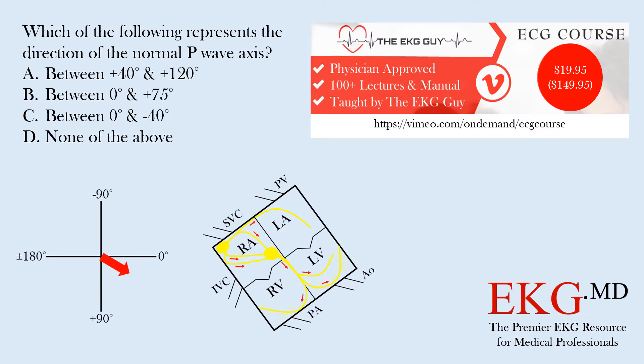Welcome to the question of the day. Today's question is, which of the following represents the direction of the normal P wave axis? Choice A is between positive 40 and positive 120 degrees. Choice B is between zero and positive 75 degrees. Choice C is between zero and negative 40 degrees. And then we have none of the above.